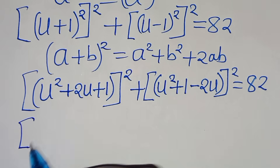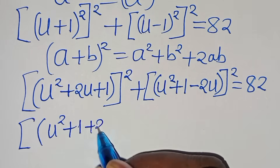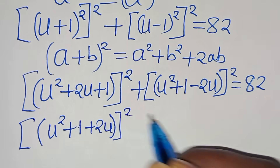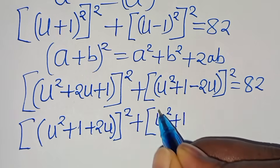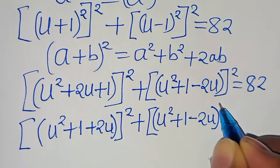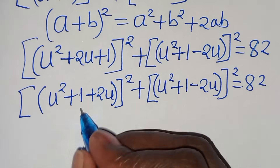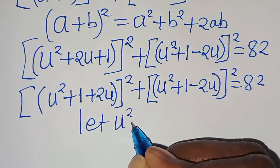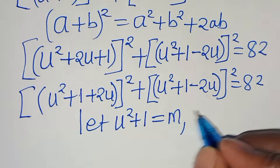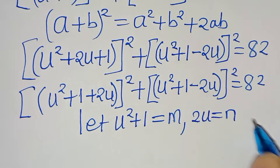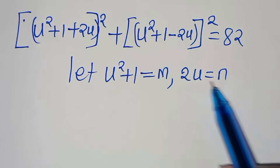This gives us (u² + 1 + 2u)² plus (u² + 1 − 2u)² equal to 82. Now we let m equal u² + 1, and we let n equal 2u. Substituting, we get (m + n)² plus (m − n)² equal to 82.